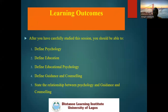When I talk about the learning outcomes, I'm talking of what I expect you to achieve at the end of this interactive section. So, after you have carefully studied this section, you should be able to: one, define psychology; two, define education; three, define educational psychology; define guidance and counseling; and state the relationship between psychology and guidance and counseling.